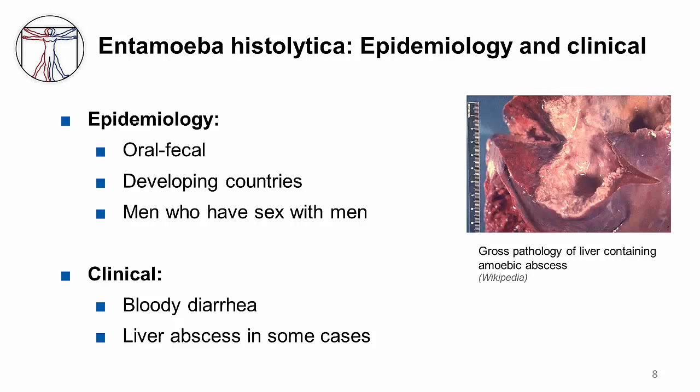In patients I've seen, they complain of right upper quadrant pain. When you aspirate some of this abscess fluid, it's often described as anchovy paste or even chocolate. One clinical pearl is that a traveler returning with bloody diarrhea and/or liver abscesses with fever could be a presenting sign of Entamoeba histolytica invasive infection. On the image, you can see gross pathology of a liver containing amoebic abscesses after the trophozoites have invaded the portal circulation, moving on to the liver.